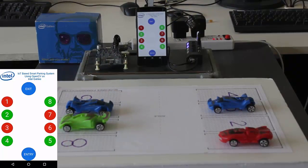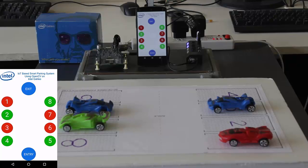As you can see, the slots 1, 3, 7, and 6 are occupied, which are being spotted by Intel Galileo. Accordingly, slots in the Android application are shown red.